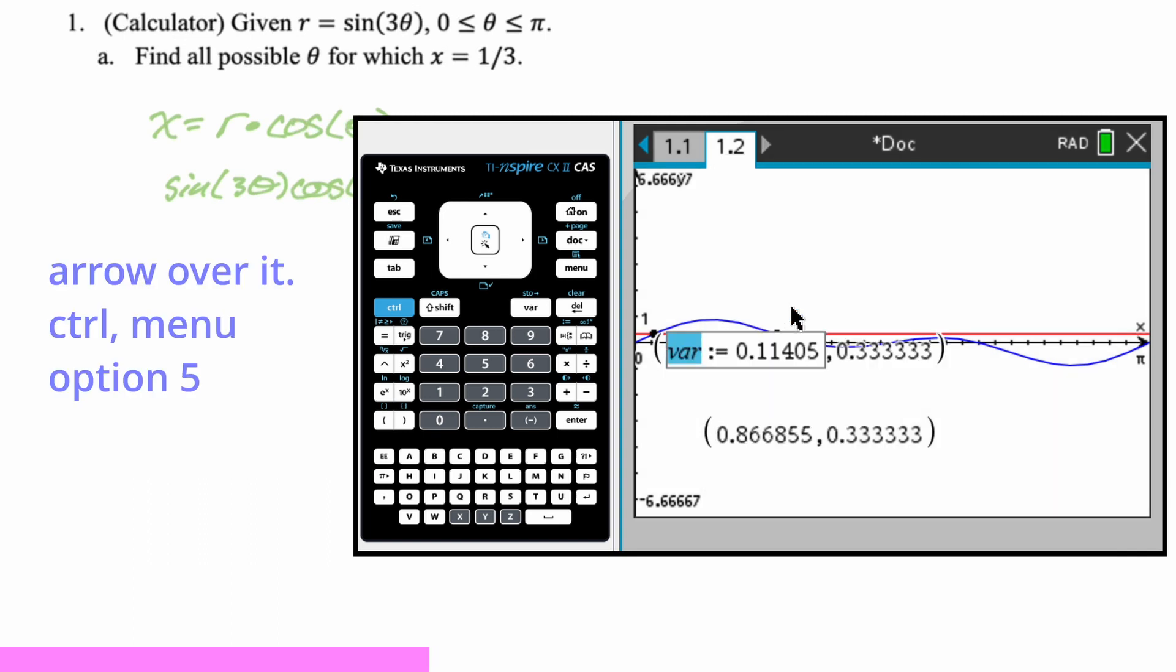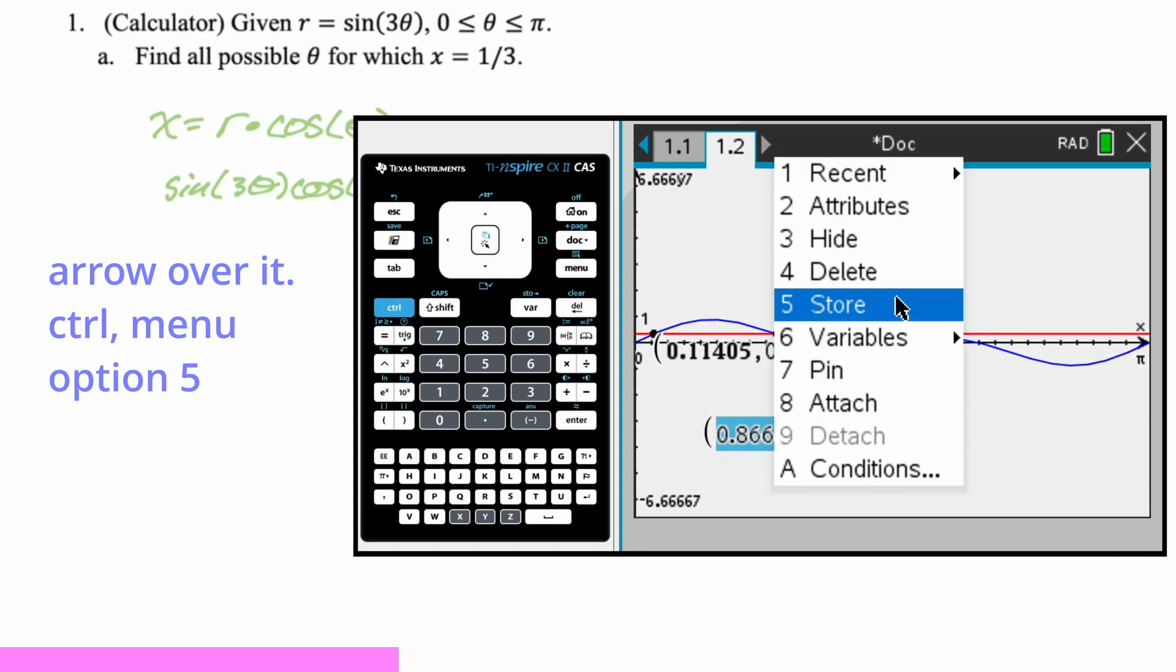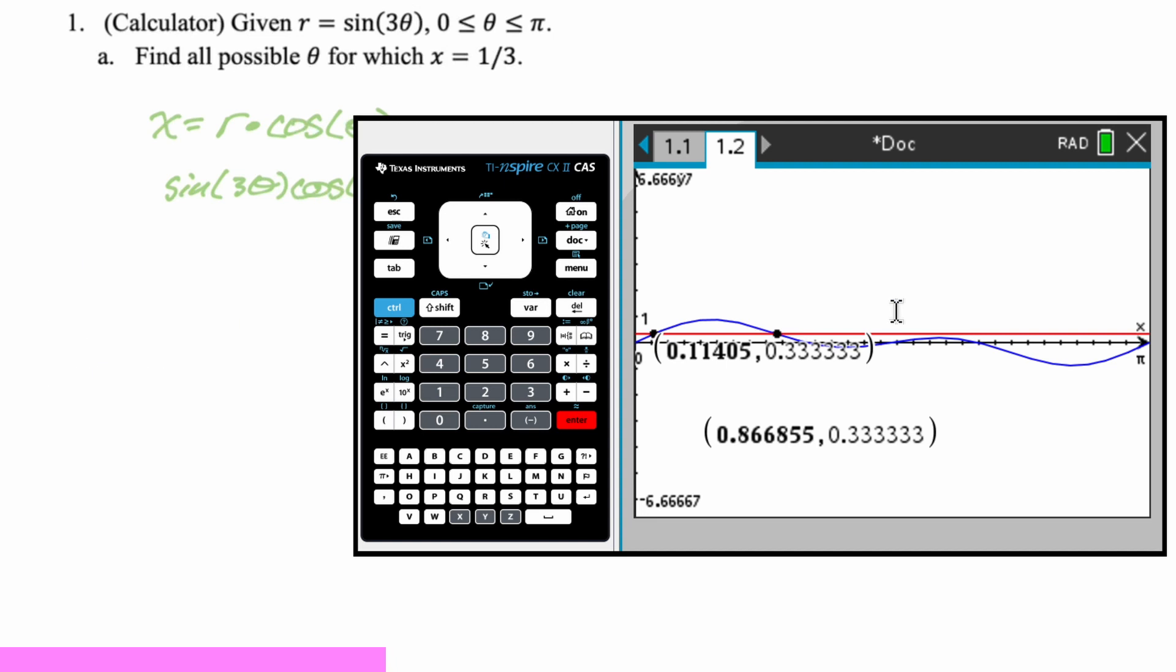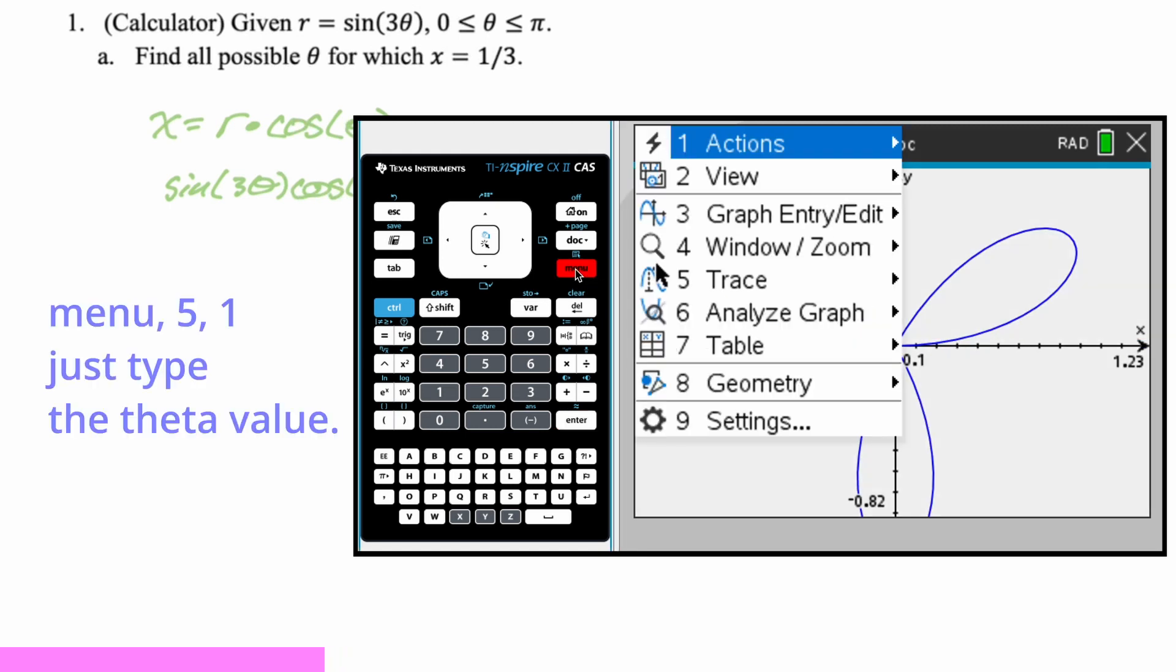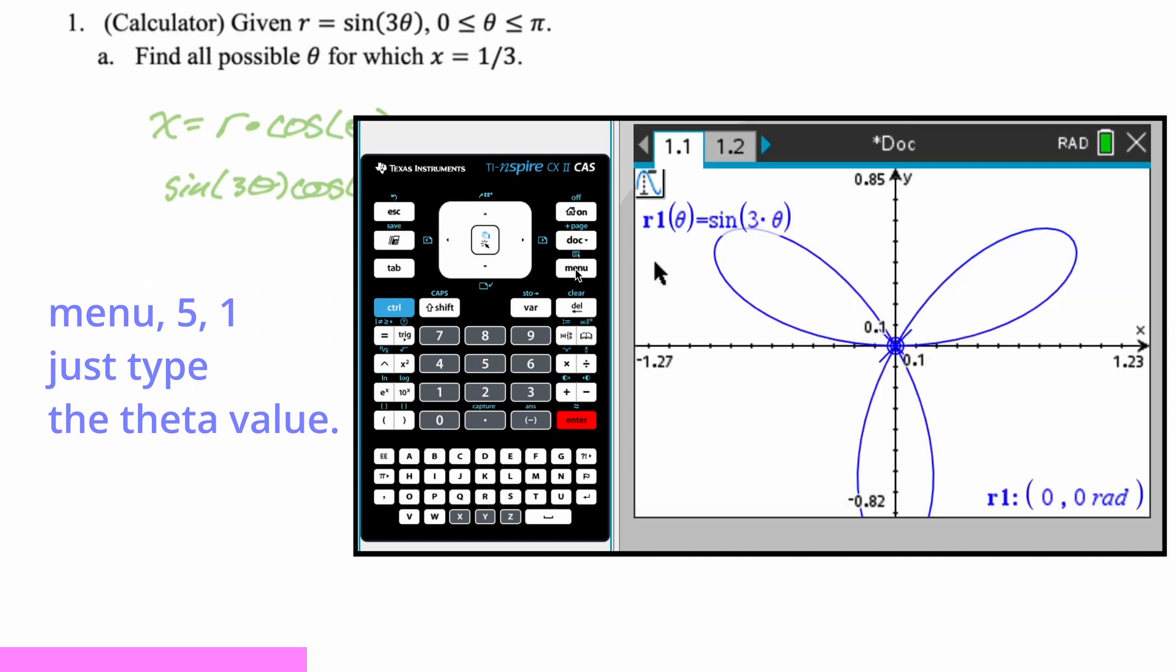And so what we're getting is we're getting these two values. So I'm going to store them. I don't really need to, but I'm going to do a store. That's control, menu, and then option 5. I'm going to store that as A, control, menu, option 5. Store this as B. So 0.114 and 0.867 are going to be the theta values for which x is equal to 1 third. Just to make sure that's right, I'm going to go back over to this graph. And I'm going to do, so I'm going to trace menu, option 5, and then graph trace. And I think that I can just type in A, which I stored. And you can see that when A is equal to 0.114, it does to me look like we're about 1 third. Like 0.33-ish on this x-axis. And then if I type in B, you can see it again looks like we're there.